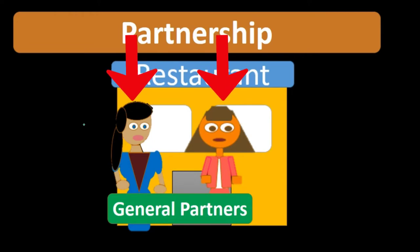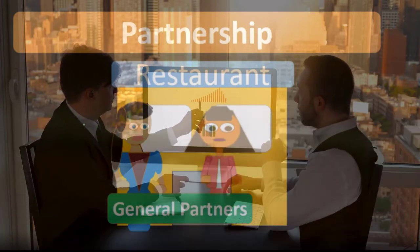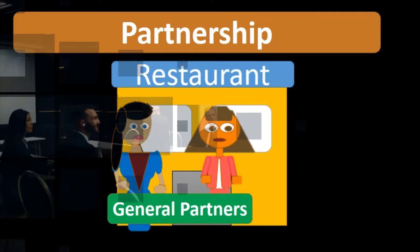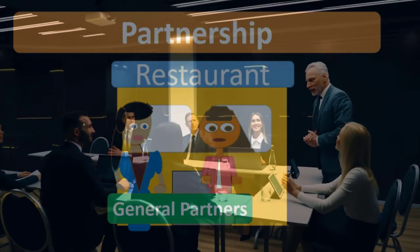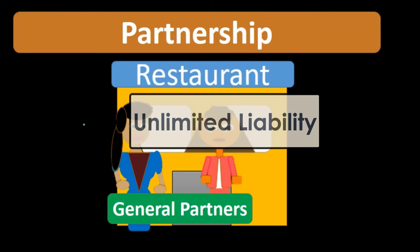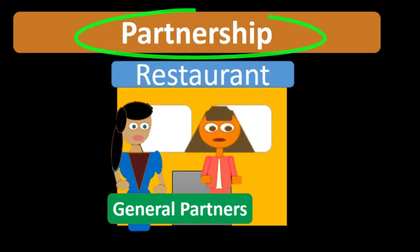For example, these two individuals joining together in the restaurant business would be a general partnership. The benefits of a general partnership include the ease of setting up — it's fairly straightforward to establish. The drawbacks, however, center around unlimited liability.